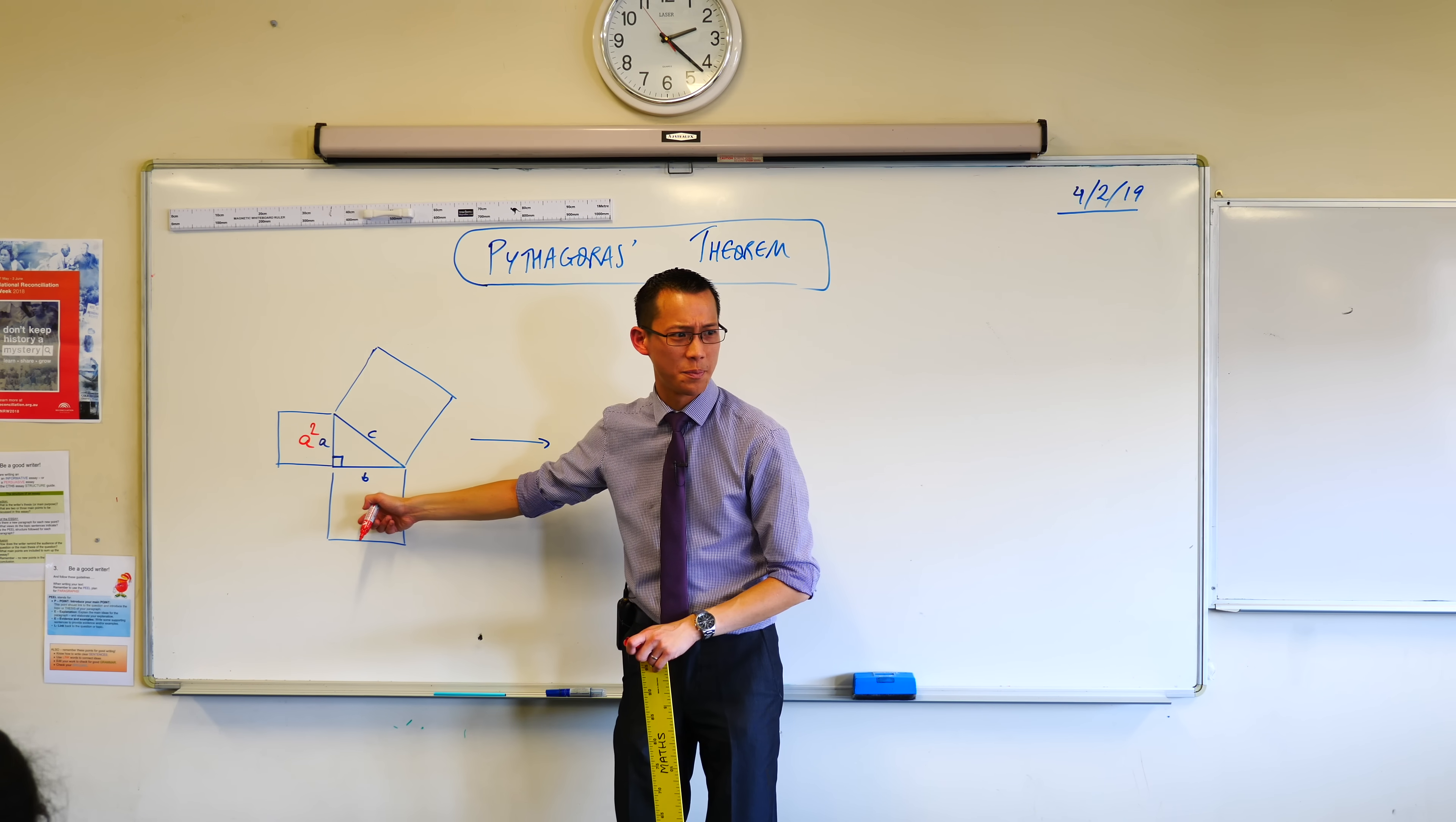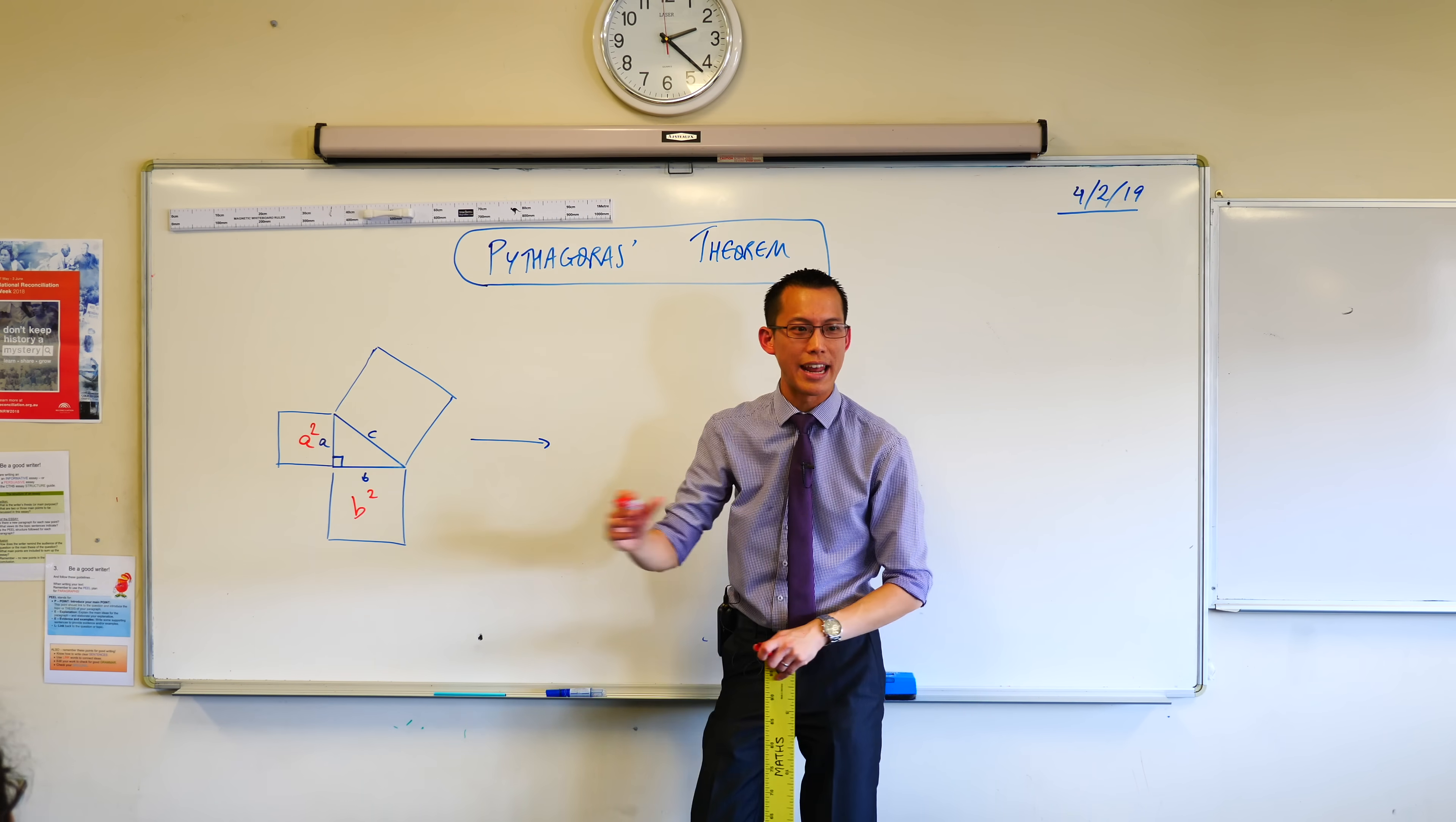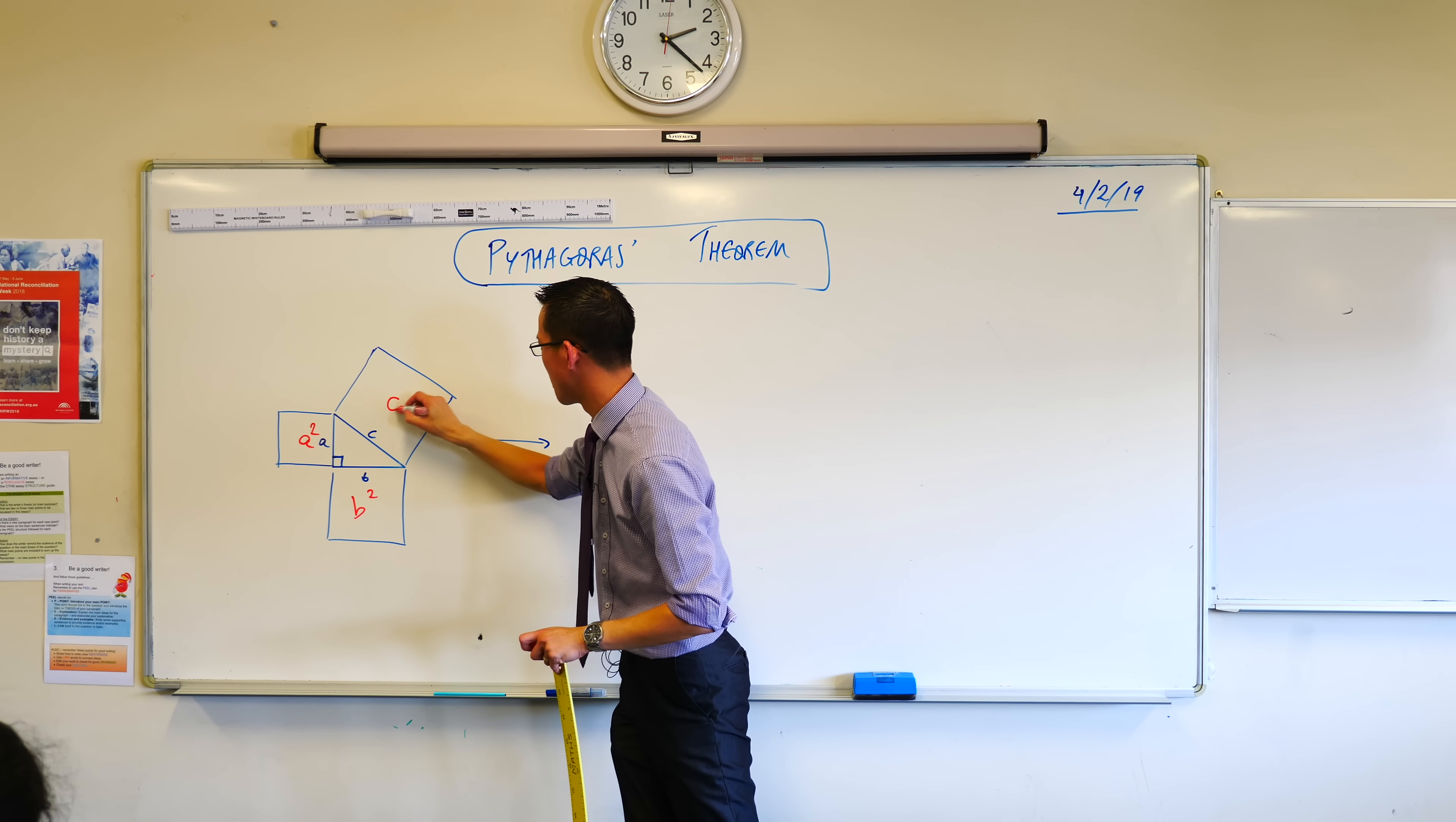So that's A squared. All right, this one down the bottom, what's it called? B squared. B squared, very good. One last one up the top, it's the biggest one, and it's C squared. Happy times.